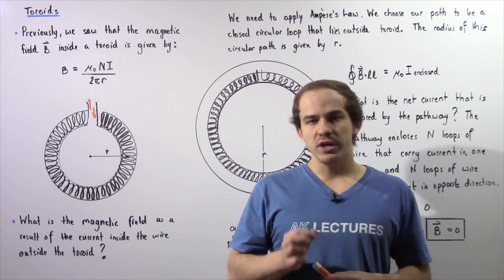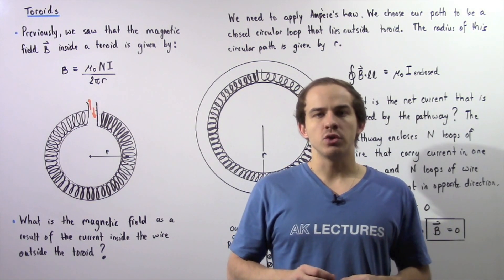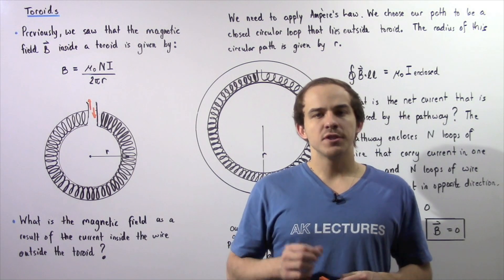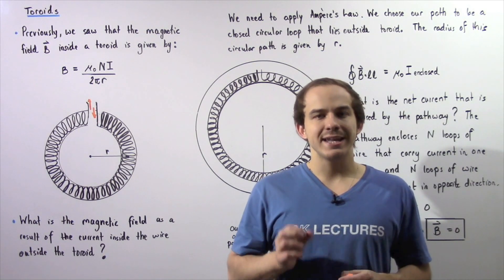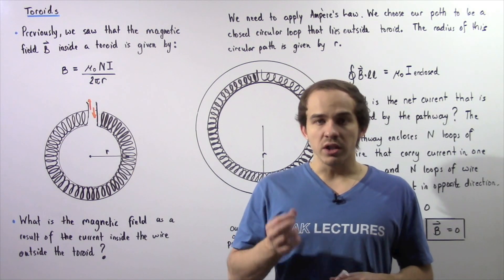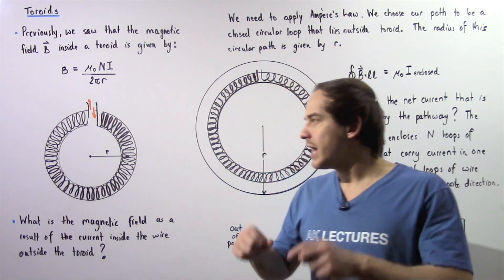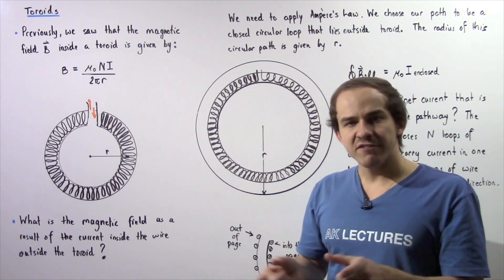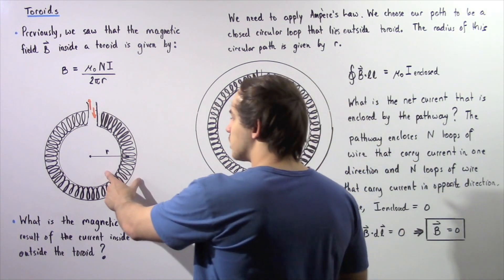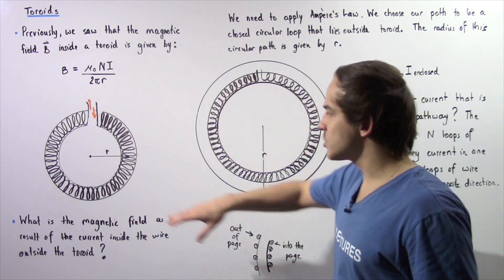In the previous lecture, we were able to use Ampere's Law to derive an equation for the magnetic field inside a toroid. Recall, a toroid is essentially a solenoid that we have bent into the shape of a circle, as shown in the following diagram.